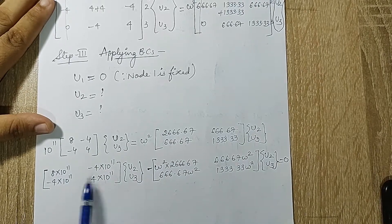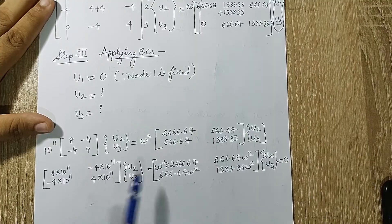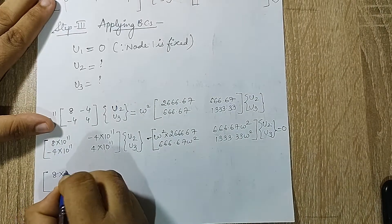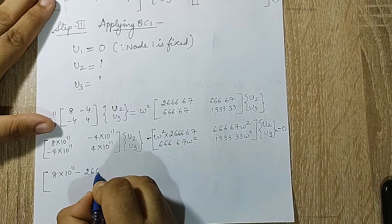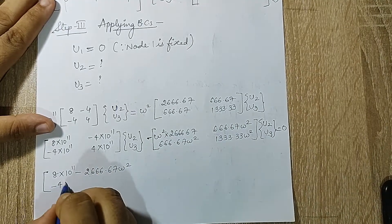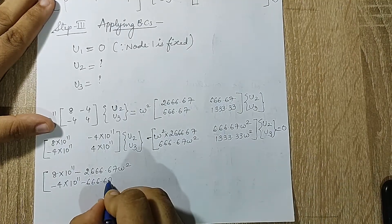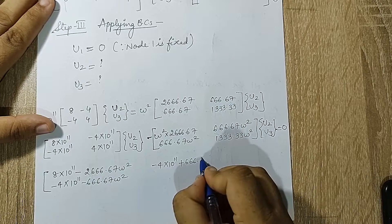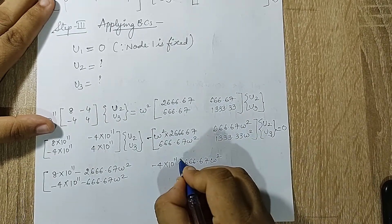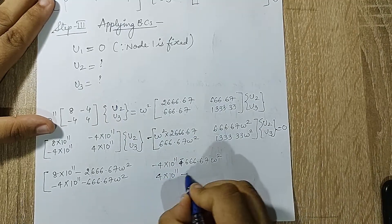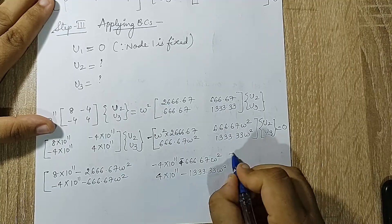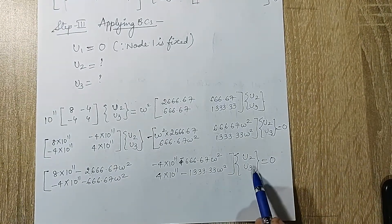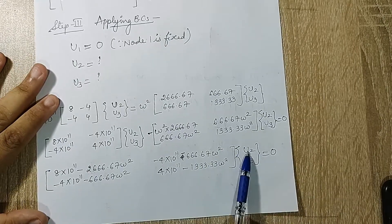Combining terms into a single matrix: the assembled matrix has entries [8×10¹¹ − 2666.67ω², −4×10¹¹ − 666.67ω²; −4×10¹¹ + 666.67ω², 4×10¹¹ − 1333.33ω²] multiplied by the common vector {u2, u3}, set equal to zero.